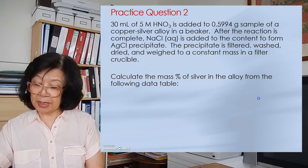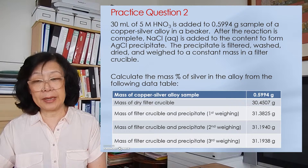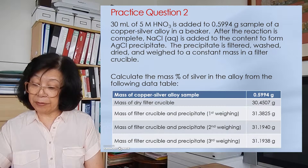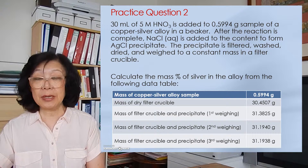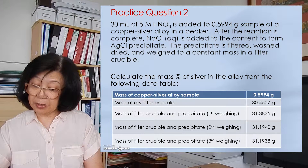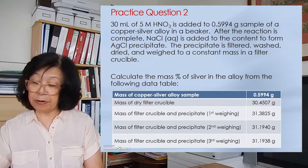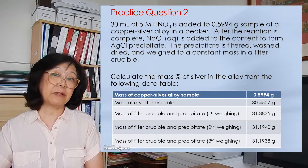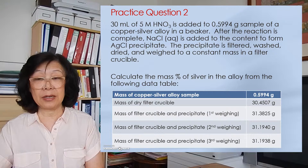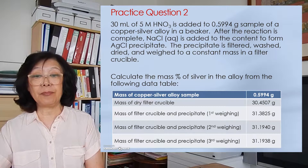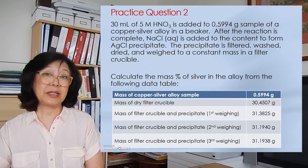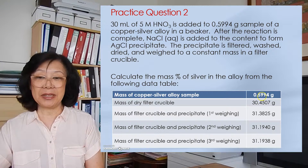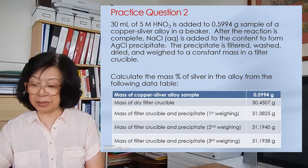Here is the data collected: the silver alloy mass is 0.5994 grams. The mass of the empty, dry filter crucible is 30.4507 grams. After collecting the silver chloride precipitate and performing repeated massing and drying cycles three times, I obtain a constant final mass of 31.1938 grams.